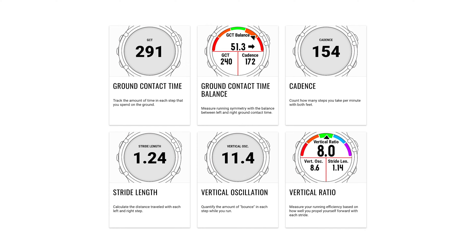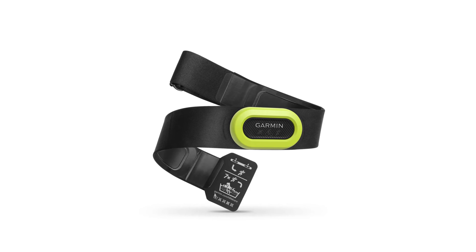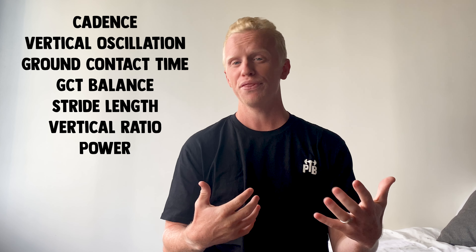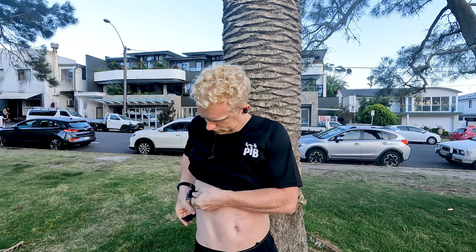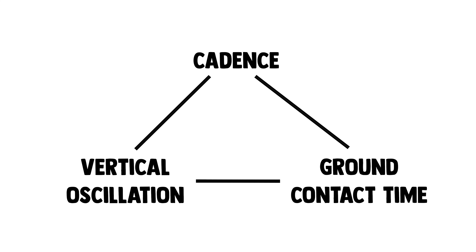Today we are going to be talking about Garmin's running dynamics. Their heart rate straps monitor these and create data for you to interpret. We're going to talk about what these are, their relationship between them all, and also if they're actually something you can use to improve your training. First we're going to break down the holy trinity of running dynamics: the relationship between cadence, vertical oscillation, and ground contact time.